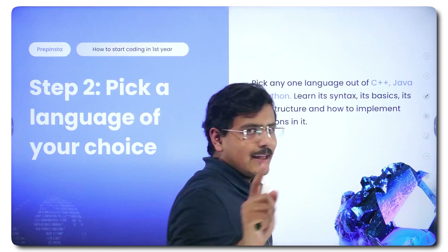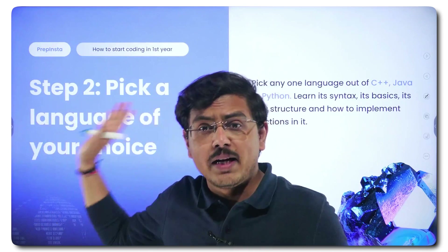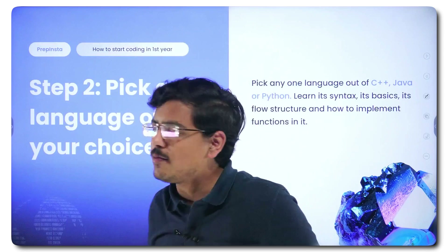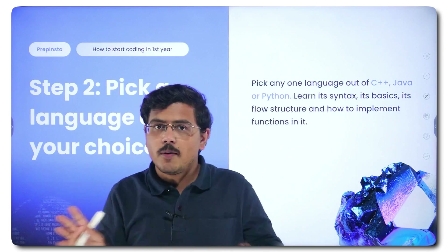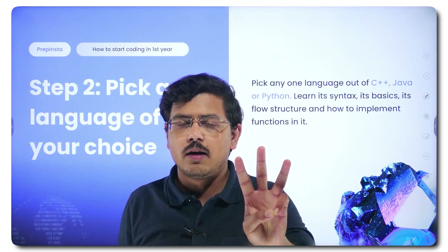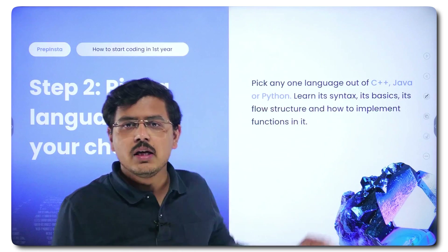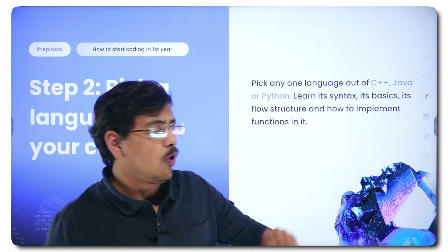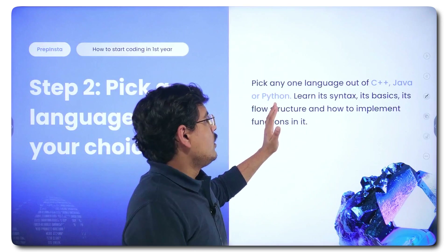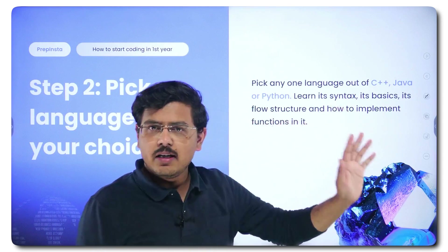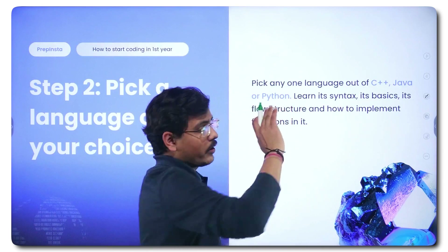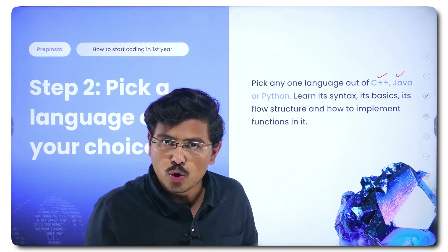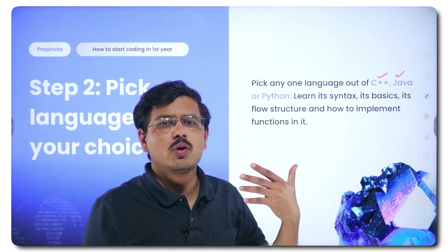Once you're done with C, go ahead and pick a language of your choice. Once you've made some programs, written Hello World for the first time in C, made some basic programs like prime number and factorial, then pick a language of your choice. The choice is out of only three languages: C++, Java, or Python. Make a particular choice from these three.